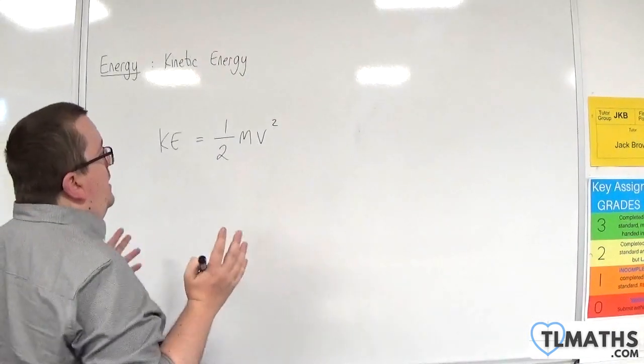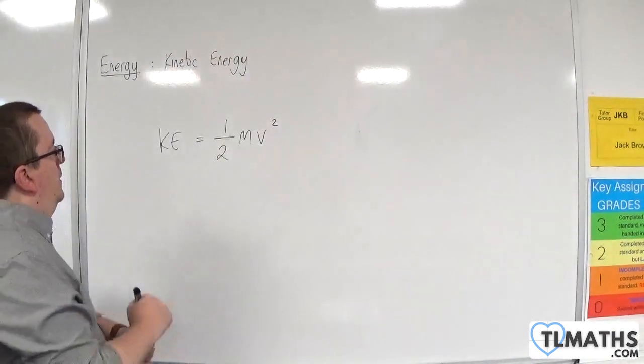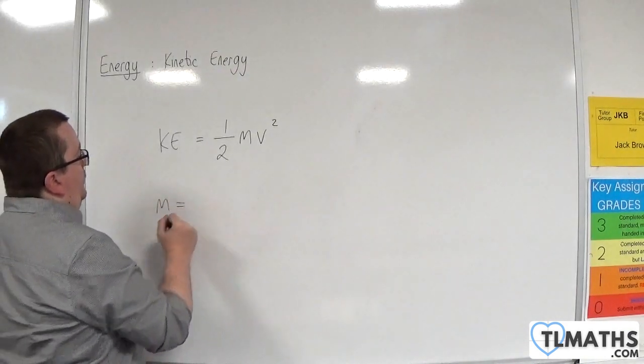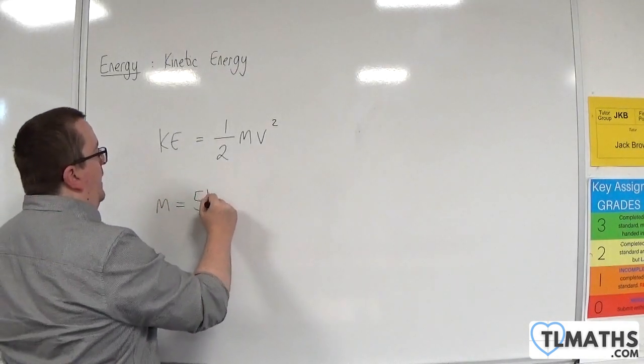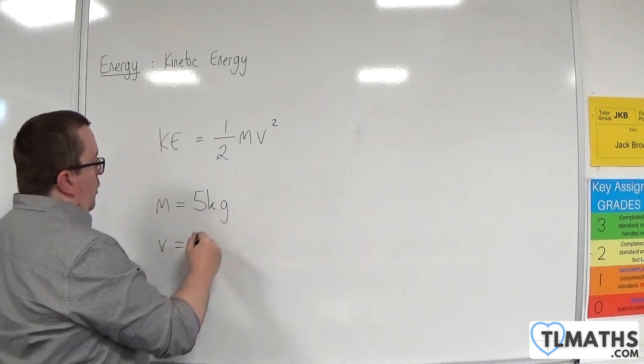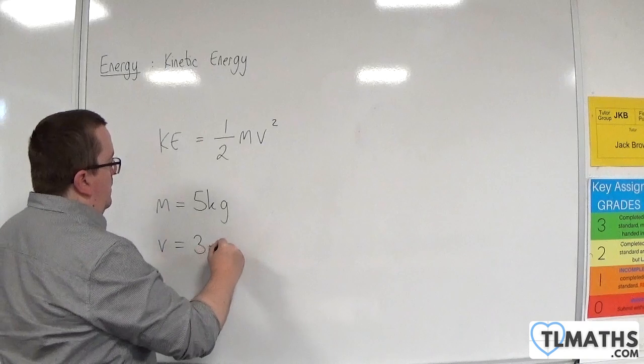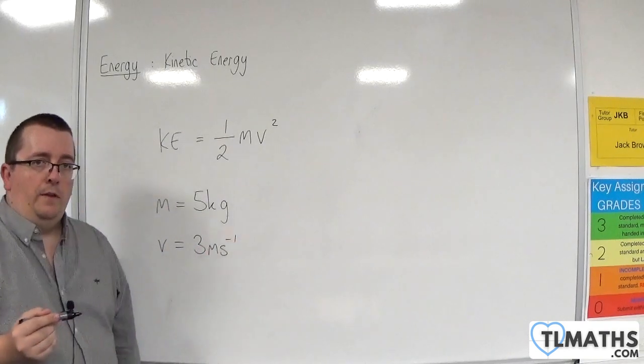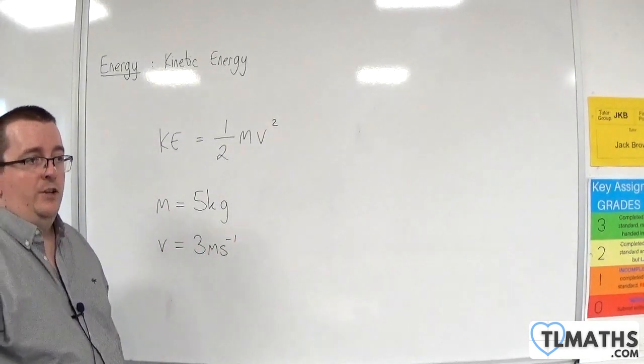So let's say, for example, you had an object that had a mass of 5 kilos and it has a velocity of 3 metres per second. Calculate the object's kinetic energy.